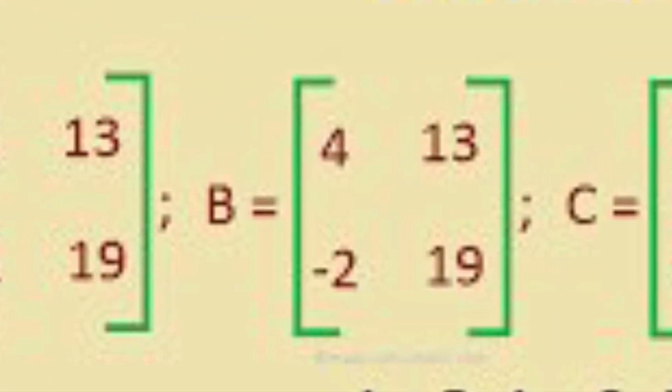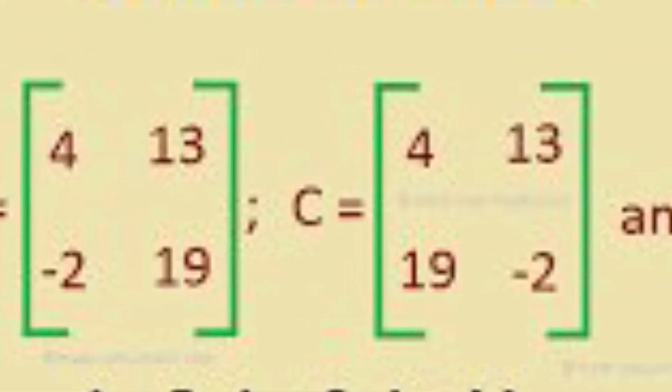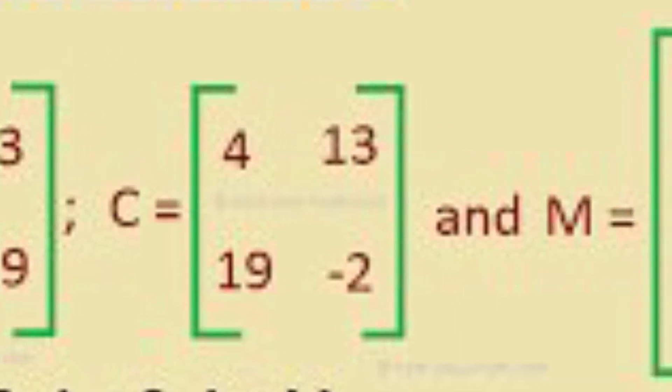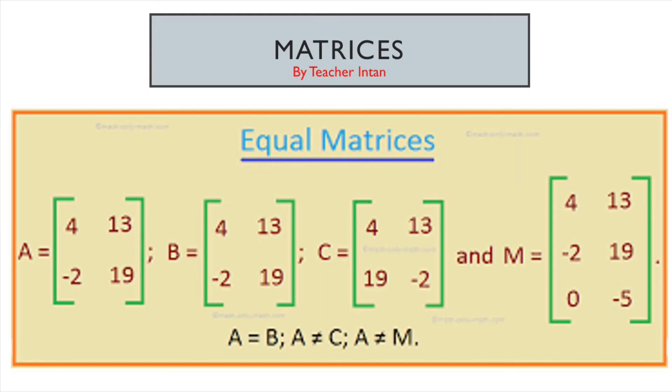So, here we have matrix A, matrix B, matrix C and matrix M. Can you determine the equal matrices? Yes, correct. A and B are equal matrices because they have the same order and all elements are the same. A and C also have the same order but not all elements are the same. So, A is not equal to C. So, how about matrix A and M? Good. They are not equal matrices because they don't have the same order.